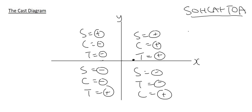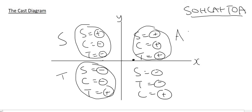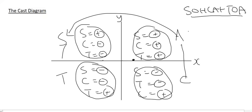Now we finally get to the reason why we call it the CAST diagram. In quadrant 1, all of them are positive — we put an A for All. In quadrant 2, only sin is positive — we put an S. In quadrant 3, only tan is positive — we put a T. In quadrant 4, only cos is positive — we put a C. Reading it: C, A, S, T — and so people call it the CAST diagram.